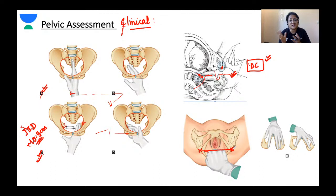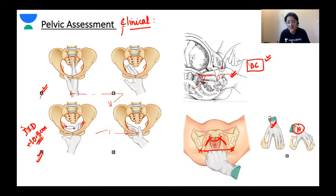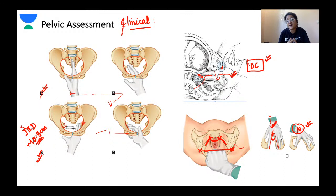The inter-tuberous diameter — the transverse diameter of the outlet — is normally about 11 cm. If we can place our fist four knuckles tight between the two ischial tuberosities, the transverse diameter of the outlet is adequate. We also place our other hand over the pubic symphysis, resting fingers on the ischiopubic rami. In a gynecoid pelvis, the pubic arch is wide with an obtuse angle more than 85 degrees, versus an android pelvis which has a narrow, acute subpubic arch.